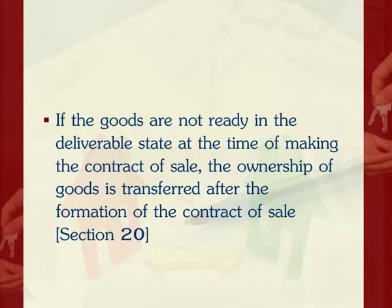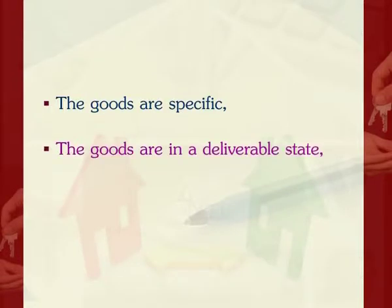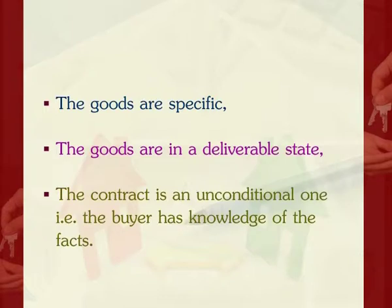Specific goods in deliverable state. If the goods are not ready in the deliverable state at the time of making the contract of sale, the ownership of goods is transferred after the formation of the contract of sale as per section 20. Certain conditions need to be fulfilled: first, the goods are specific; second, the goods are in deliverable state; third, the contract is an unconditional one, that is, the buyer has knowledge of the facts.